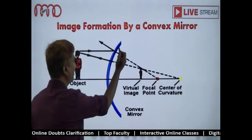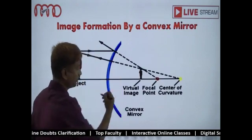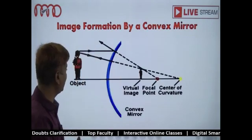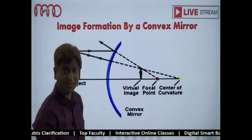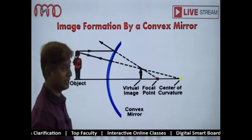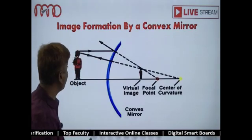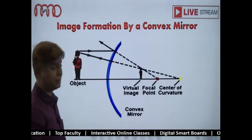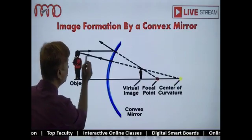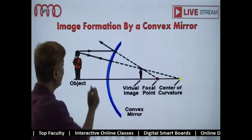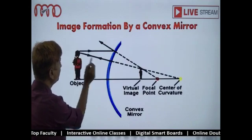This is a convex surface completely, which is a reflecting surface, and here I am keeping an object. When I keep the object here, I know how I can get the image formation by this object. I am taking two rays which are moving from the head